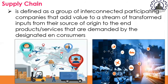Supply chain is also defined as a group of interconnected participating companies that add value to a stream of transformed inputs from their source of origin to the end products or services demanded by designated end consumers. Key characteristics of a supply chain include: first, it can only be formed if there are more than one participating company; second, the participating companies normally do not belong to the same business ownership, hence there is legal independence among them.